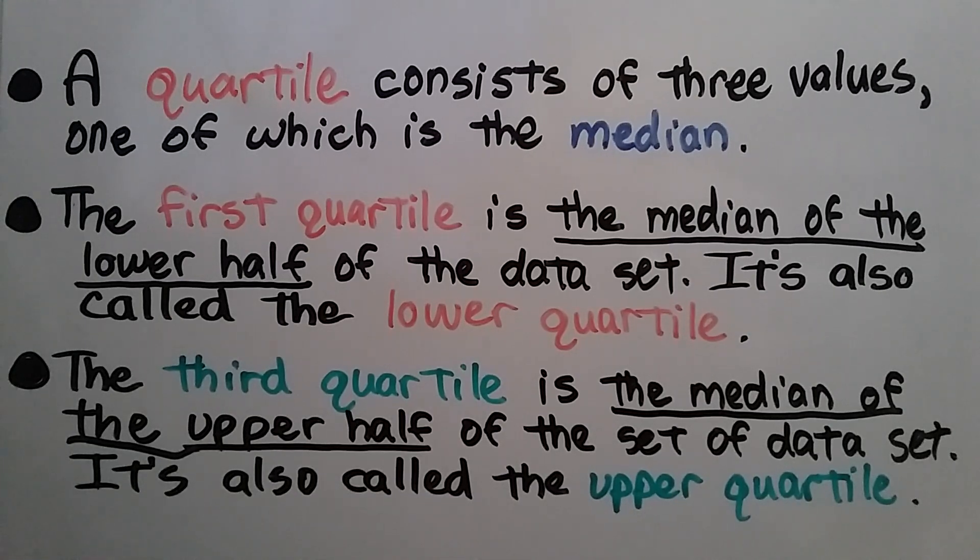A quartile consists of three values, one of which is the median. The first quartile is the median of the lower half of the data set. It's also called the lower quartile. The third quartile is the median of the upper half of the data set. It's also called the upper quartile.